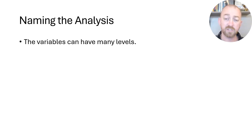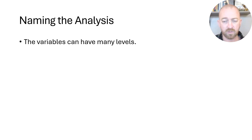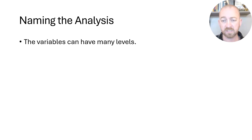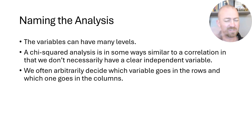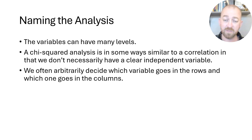I think the most important starting point is to talk about what we call the analysis. When we had a single-variable chi-squared, we would just name the number of levels the variable had — a four-cell, two-cell, or nine-cell chi-squared. When we have two variables, we actually need to count how many levels each one has and name it that way. It's also important to note that this is sort of like a correlation, in that most chi-squared analyses you can't actually name an independent and a dependent variable. We're just looking at the association between two variables.